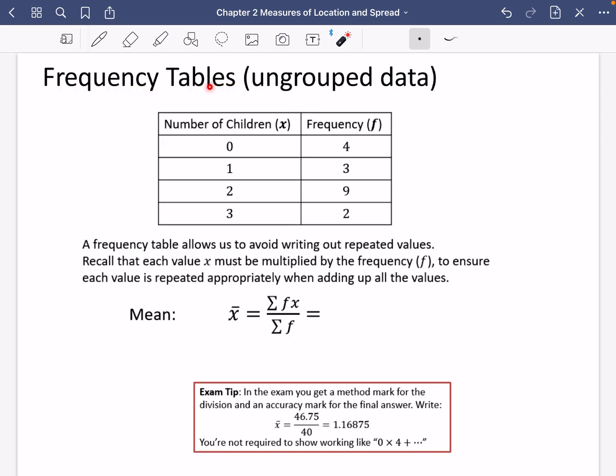So we're no longer going to be doing averages of listed data, we're now going to be doing it of frequency tables instead.